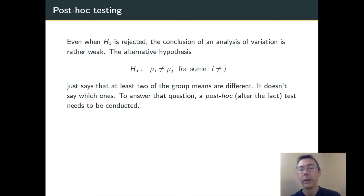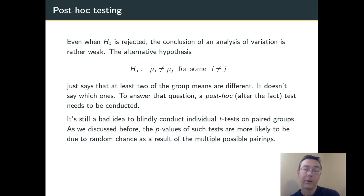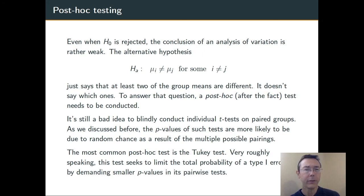A quick word about what to do when you do reject the null hypothesis. When you reject the null hypothesis, the conclusion is that at least one pair of the groups have different population means. We don't say anything about which groups those are. The next logical step is to actually go back out and try to figure out which ones are different. It's still a bad idea to do two sample t-tests pair-wise for all the reasons that we said before. Instead, you want to do some sort of specialized post-hoc test, after the fact test. Obviously, I'm not going to go into that in this video. The most common one to use is the Tukey test. Very roughly speaking, what you're doing is giving up some statistical power, demanding smaller p-values in your pair-wise tests before you're willing to conclude that the difference between them is statistically significant.